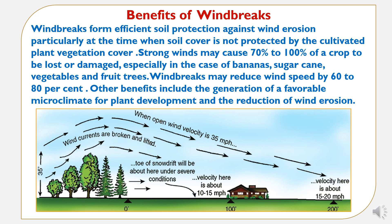As shown in the picture, when wind velocity is 35 miles per hour on the windward side, due to windbreak interference, on the leeward side the speed will go down to 15 to 20 miles per hour — a great reduction in speed, which will protect crops, houses, and plantations to a significant level and minimize damage.